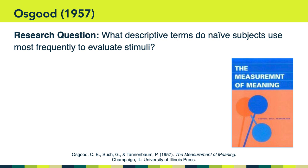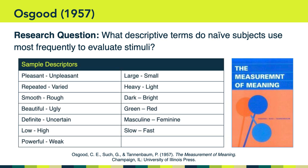I want to share one other fascinating study related to visual perception — by Osgood and colleagues from the early 1950s. The research question was: what descriptive terms do naive subjects use most frequently to evaluate visual stimuli? In other words, when you show somebody something they've never seen before, how do they evaluate it? They asked people what they thought was most important, using sample descriptors like pleasant or unpleasant, repeated or varied, smooth or rough, large or small, beautiful or ugly, low or high.